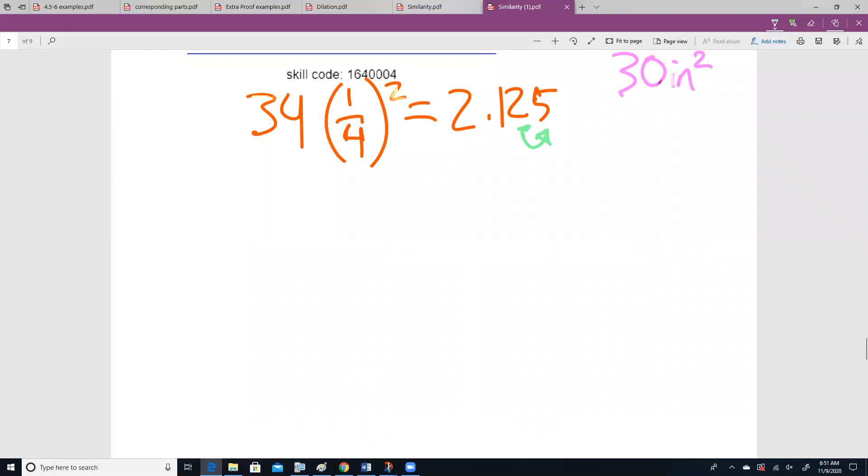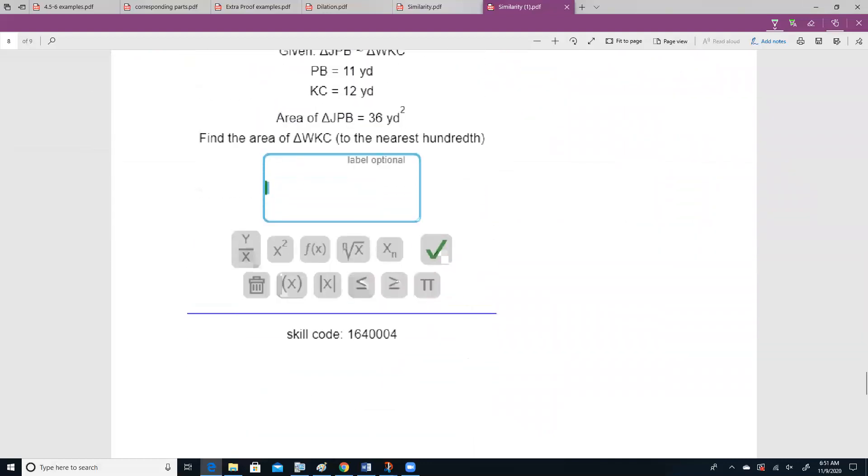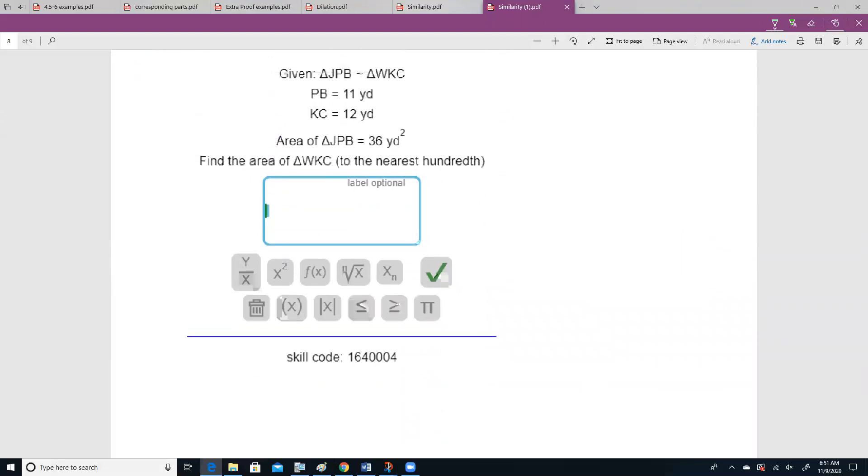Let's do that again. We have the area of jpb. jpb corresponds to pb. So we're going from pb to kc. Let's solve for our scale factor. We have 11 times some scale factor is 12. Divide by 11 on both sides. My scale factor is going to be 12 over 11. I'm not going to convert that to a decimal right now, because I don't want to make any counting errors.